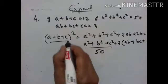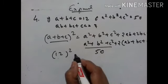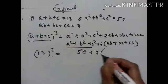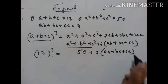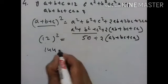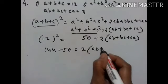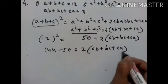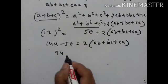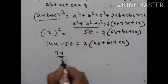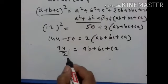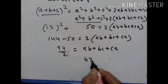Substituting: a plus b plus c equals 12, so 12 square equals 50 plus 2 into ab plus bc plus ca. 12 square is 144, so 144 minus 50 equals 2 into ab plus bc plus ca. 144 minus 50 is 94, and 94 divided by 2 equals 47. So ab plus bc plus ca is equal to 47.